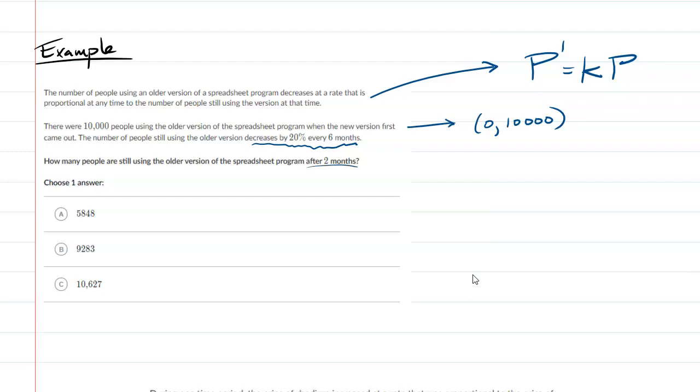How many people are still using the older version of the spreadsheet program after two months? Okay, so it definitely goes by months. I wanted to make, I wanted to find out if it was years or months. Okay. So we have to calculate the second point, which is annoying. It decreases by 20% every six months. So at six months time, oh, I guess this isn't that bad because it's 10,000. 20% of 10,000 would be 2,000. So at six months time, there should be 8,000 people using it. Because that's a decrease of 20%. Do you guys want me to go over how to calculate 20%? Like 0.2 times 10,000. So I subtracted it.